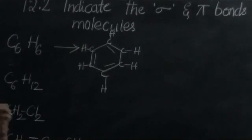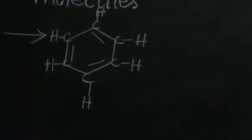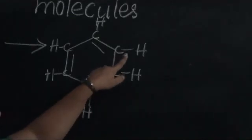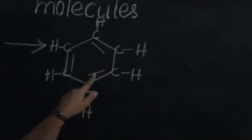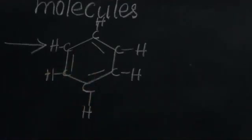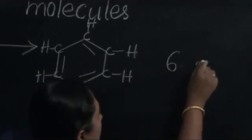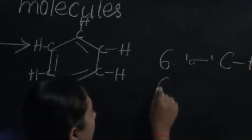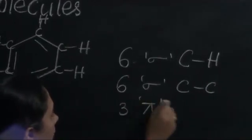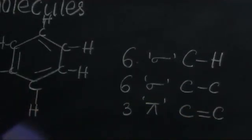Now let us count the number of sigma bonds and pi bonds. Wherever we have a single covalent bond, it is definitely a sigma bond. Wherever we have a double covalent bond, there is one sigma bond and one pi bond. The double bond in benzene is due to the alternating positions of the pi electron cloud in the benzene ring. So there are six sigma bonds between carbon and hydrogen, six sigma bonds between carbon and carbon, and three pi bonds between carbon and carbon.